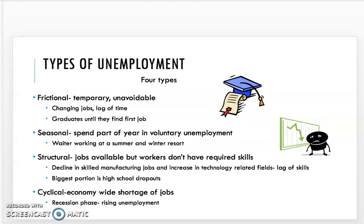Structural unemployment is when jobs are available but you don't have the skills. We saw this when steel mills and coal mines were closing in western Pennsylvania — workers had skills, but not for the jobs available. The biggest portion of structural unemployment is actually high school dropouts, who aren't qualified for many jobs. Cyclical unemployment is when the whole economy has a widespread shortage of jobs — this is the recession phase with rising unemployment. A lot of what we're seeing right now is cyclical, because the government has mandated that businesses are shut down.